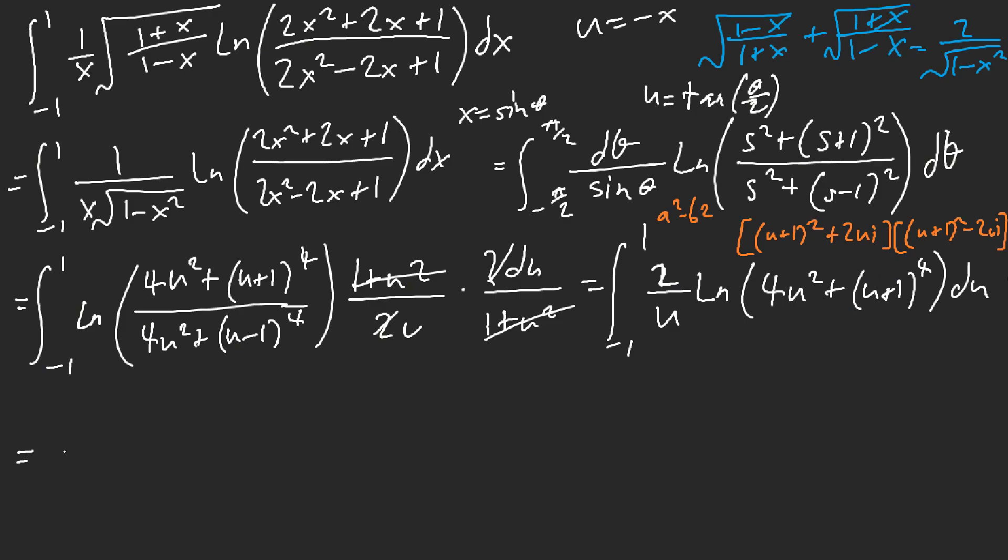So this is going to be 2u squared. I'm sorry, actually, no, no, no. u plus 1 squared plus 2u i. Yeah. And then u plus 1 squared minus 2u i. That sounds about right. Yeah. So we're going to complexifyingly factor it.